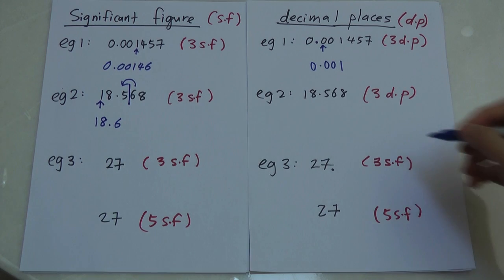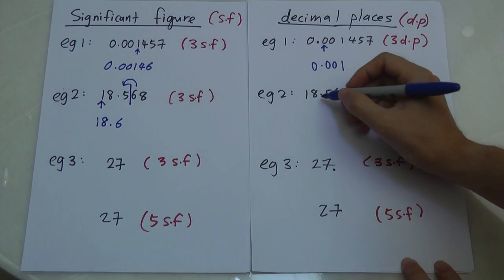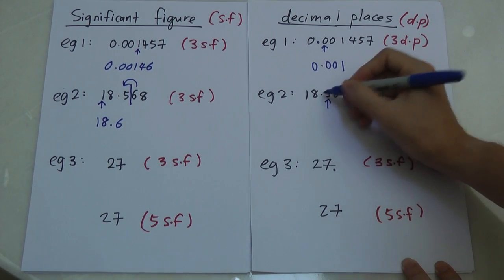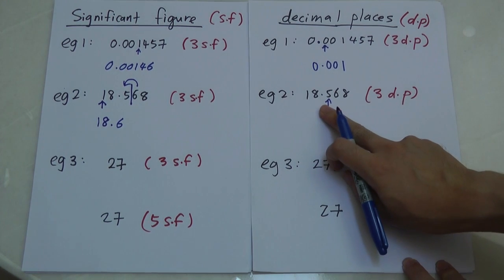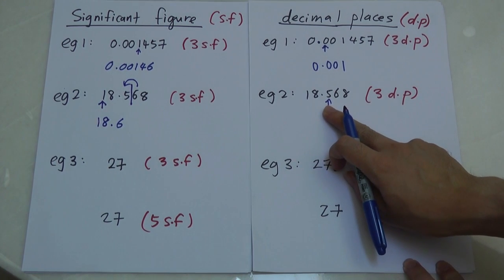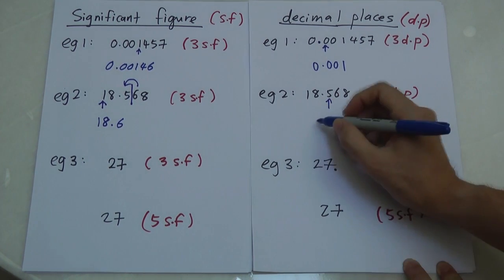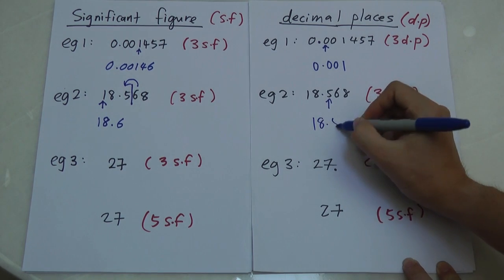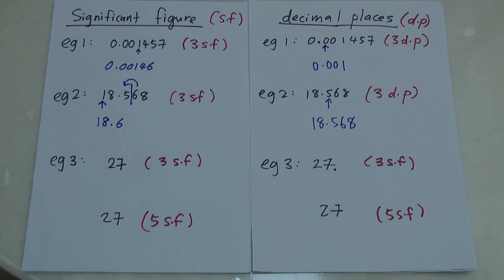For decimal places with this same number, you start counting after the dot — one, two, three — and you get the same digits: five, six, eight.